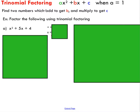The process for trinomial factoring — there are a couple of different ways of doing it. One is sort of lengthy, the other is a shortcut. The first thing you need to do is find two numbers which add to get the b term — the coefficient in front of x — and those numbers also need to multiply to get the c term, which is always the constant at the end without the x.